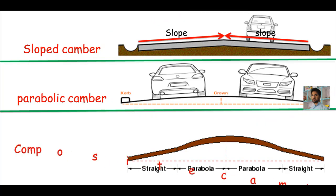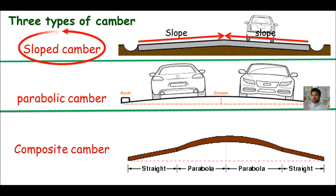So you can call it composite camber. Here we learned three types of camber: sloped camber, parabolic camber, and composite camber.